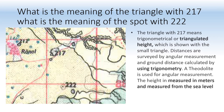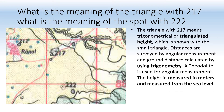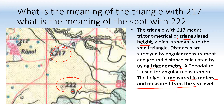What is the meaning of a triangle with 217, and what is the spot height 222? A triangle symbol means trigonometrical or triangulated height. Distances are surveyed by angular measurement and ground distance is calculated using trigonometry. A theodolite is used for angular measurement. The height is measured in meters from sea level — this is most important and must be included in your answer.